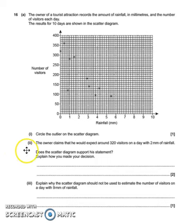So we have this scatter graph showing the amount of rainfall and the number of visitors to a tourist attraction. We've got all these crosses showing some nice correlation, negative correlation, going down the scatter graph.